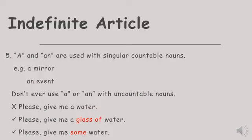Don't ever use a or an with uncountable nouns. Jangan gunakan kata sandang a ataupun an dengan kata benda yang tidak bisa dihitung. Why is the first sentence incorrect? 'Please, give me a water.' Because water is an uncountable noun, we cannot put article a before water. But it is okay when we add some words before water, like: 'Please, give me a glass of water.' — here a is used before glass, not water. Or: 'Please, give me some water,' using the word some.